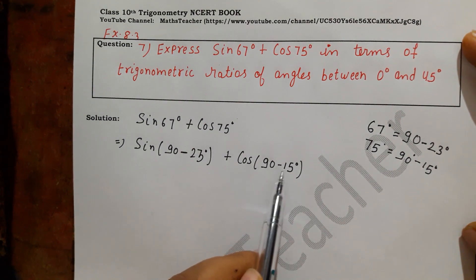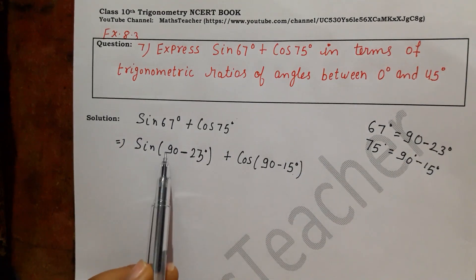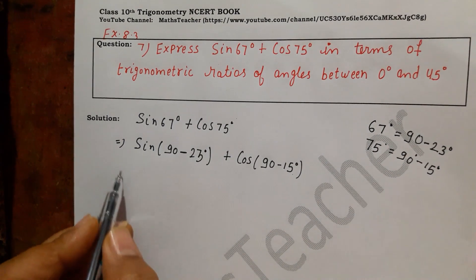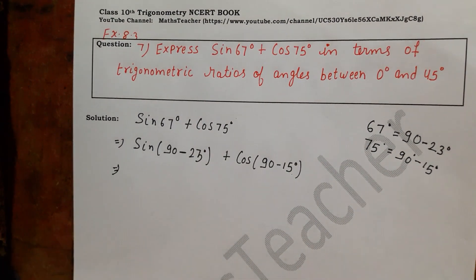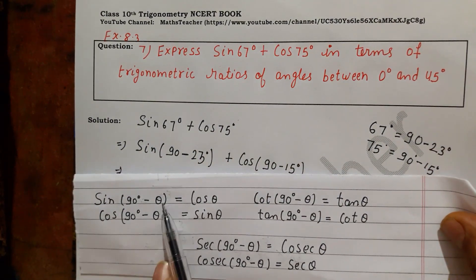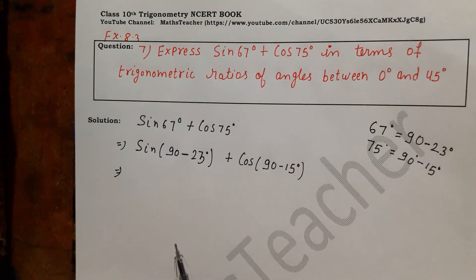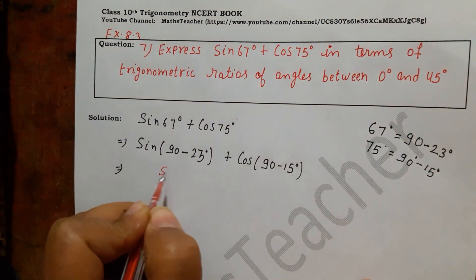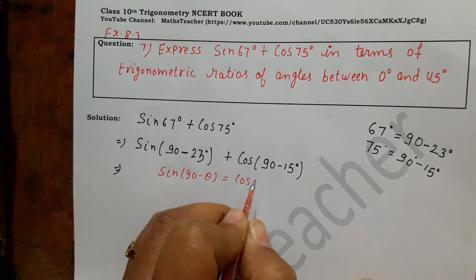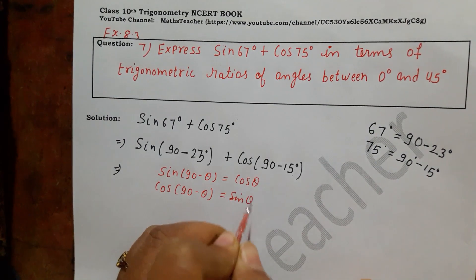And cos 75° we can write as 90° minus 15°, because the complementary of 75° is 15°. When changing angles, you have to take care of how many degrees subtract from 90°, so that there is no change in the equation. Now we will use the formulas: sin(90° − θ) = cos θ and cos(90° − θ) = sin θ.